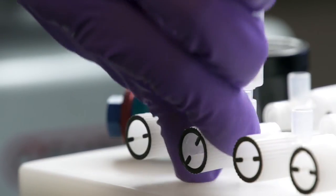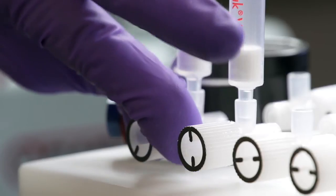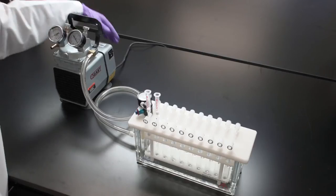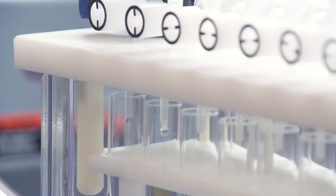Set the regulated vacuum source to zero and turn the stopcocks to the open position. Gradually increase vacuum until you see approximately one droplet per second coming through the cartridges.